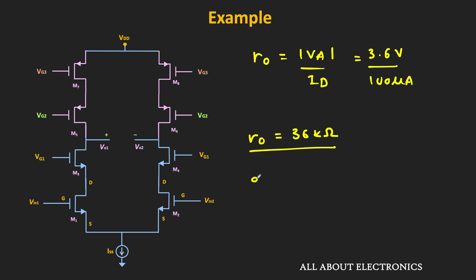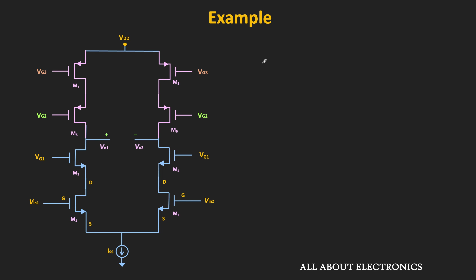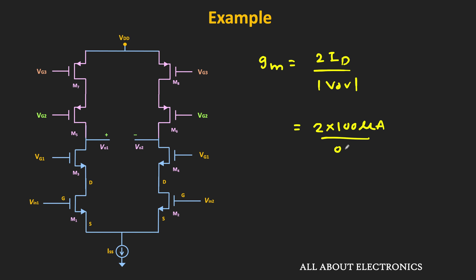The early voltage of each MOSFET is equal to 3.6 V, while the drain current ID for each MOSFET is equal to 100 μA. That means the output resistance of each MOSFET is equal to 36 kΩ. Similarly, let us find the value of the transconductance. The drain current through each MOSFET is the same, and the overdrive voltage of each MOSFET is equal to 0.2 V. That means the transconductance of each MOSFET is also the same, since GM equals 2 times ID divided by Voverdrive, which is 2 times 100 μA divided by 0.2 V, equal to 1 mA/V. So the transconductance GM of each MOSFET is equal to 1 mS.